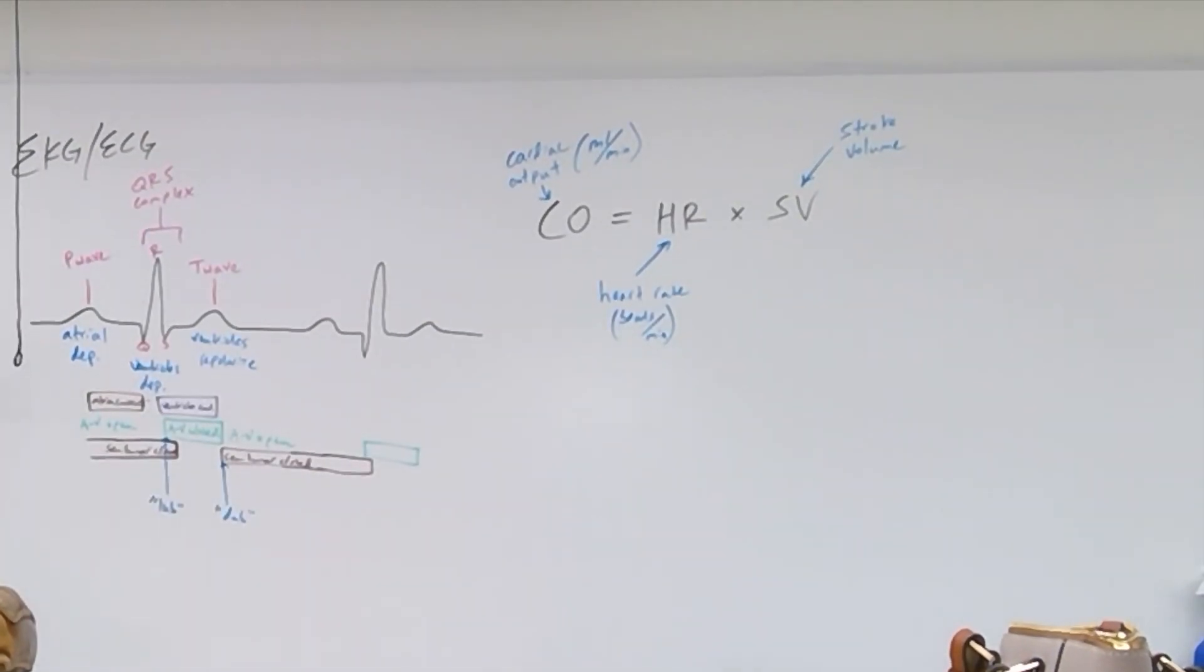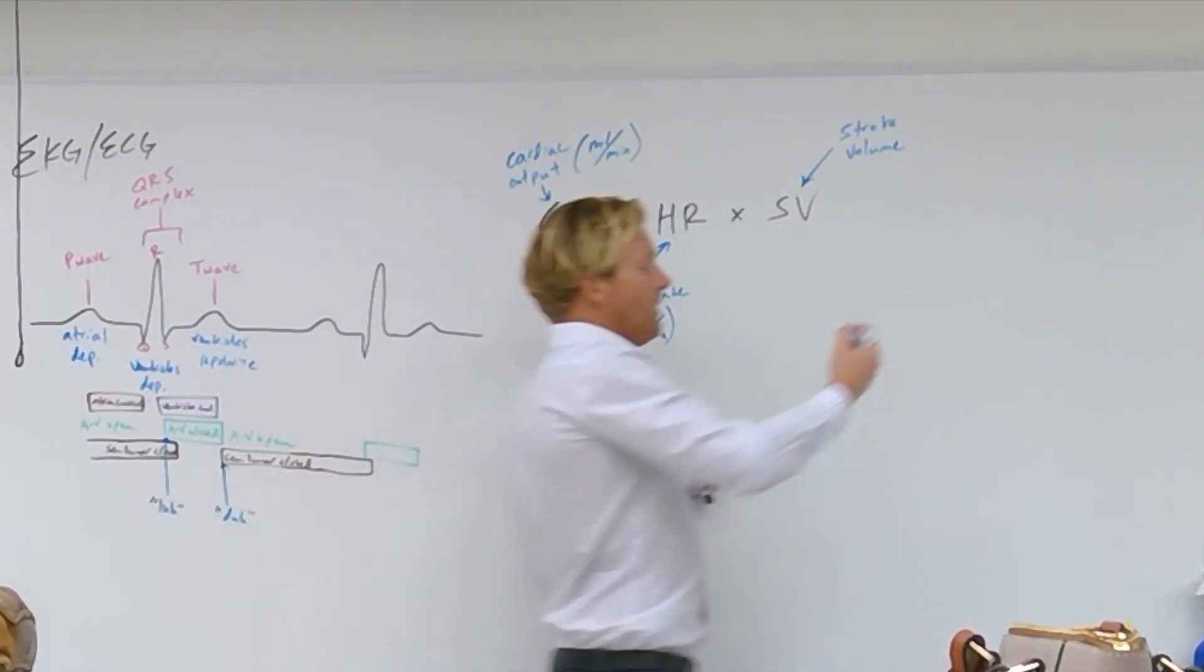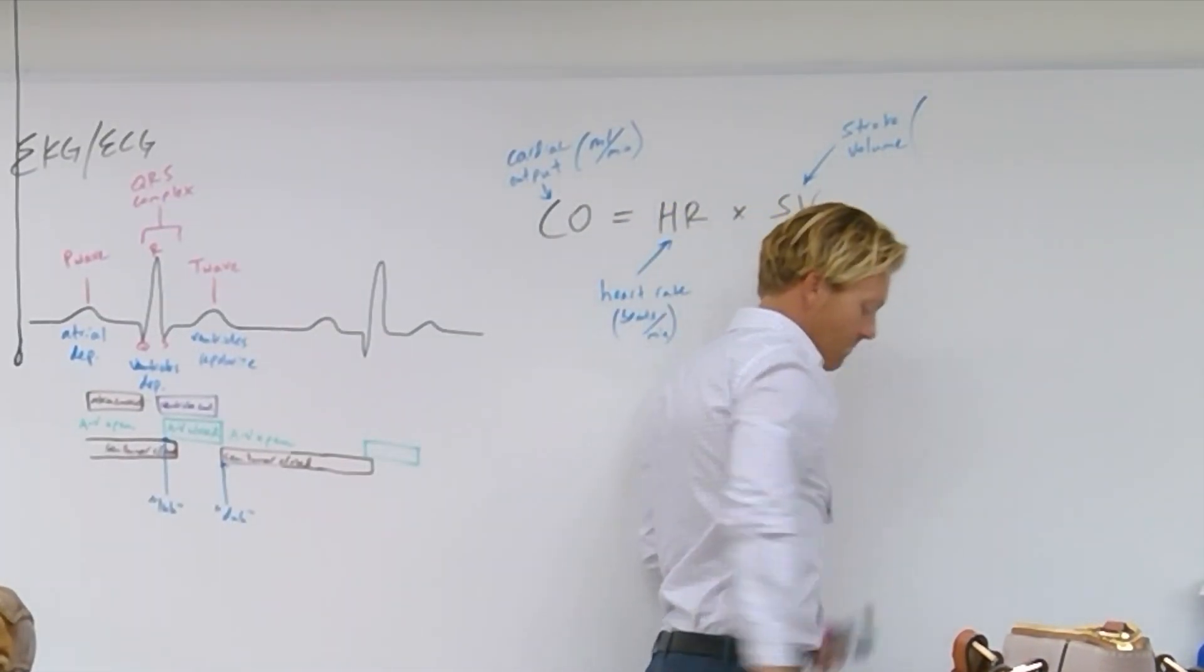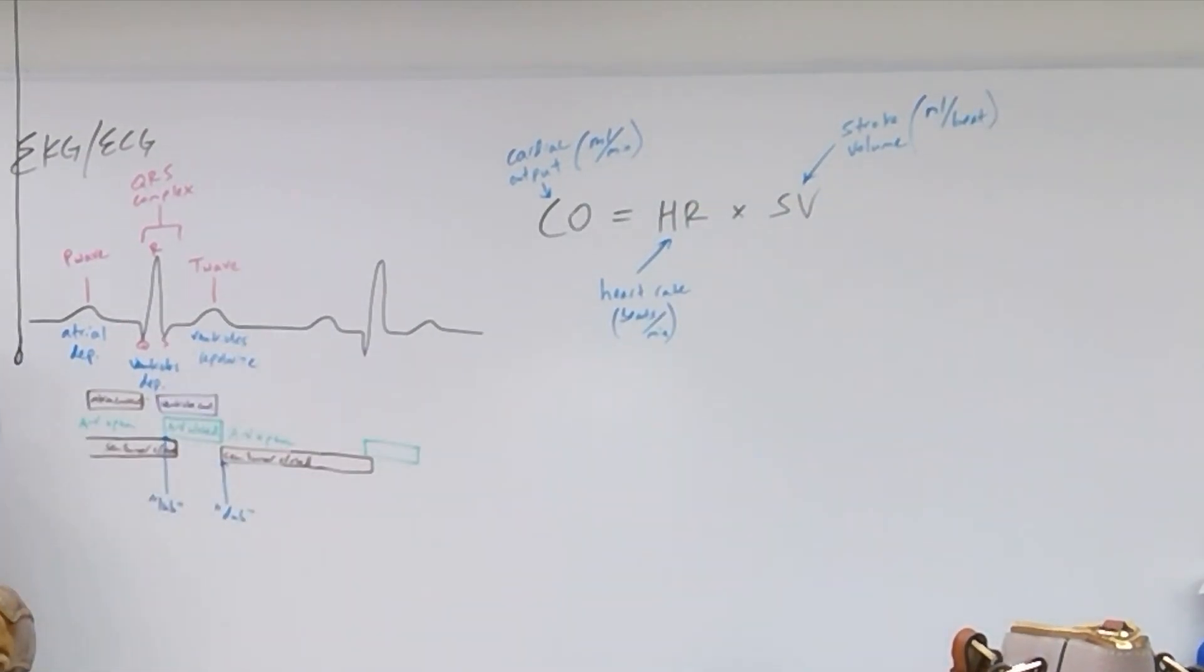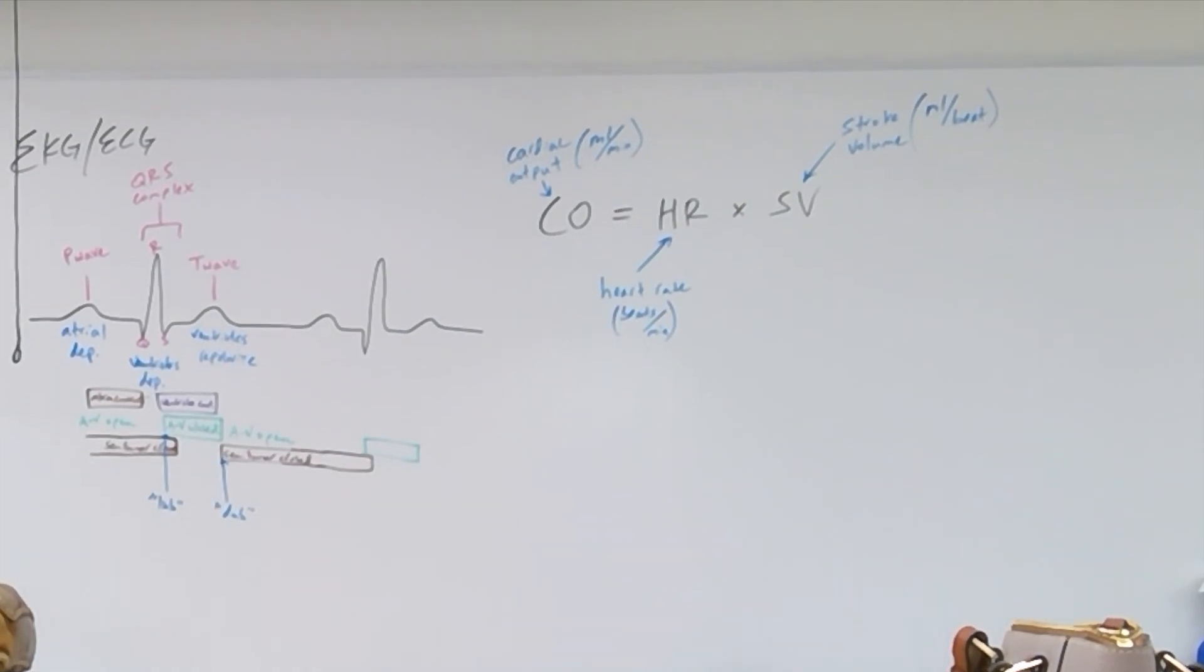Stroke volume is different. Stroke volume is the amount of blood that comes out of your heart with each beat. So it's the amount of blood that comes out of the left ventricle with each beat. So the units for that are milliliters per beat. I mean, this is actually not a very tricky concept. It's kind of simple.